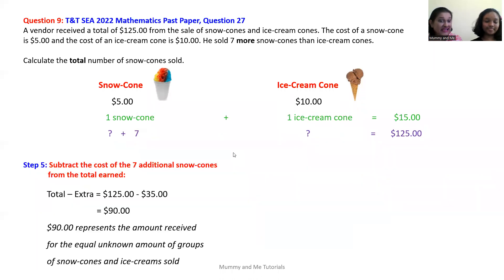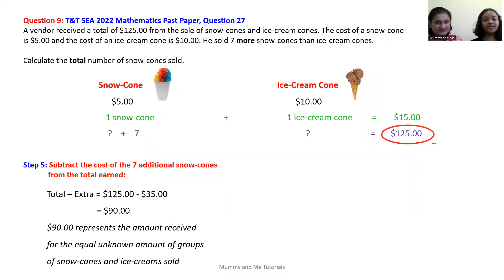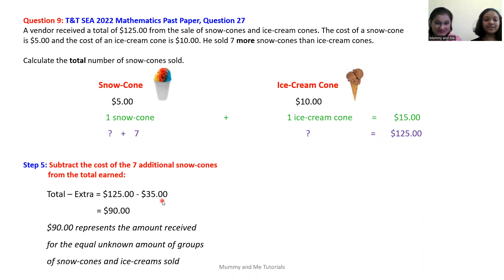Step five is to subtract the cost of the seven additional snow cones from the total money that the vendor earned. The total amount the vendor earned is $125, and the cost of the seven additional snow cones is $35. So $125 minus $35 gives you $90.